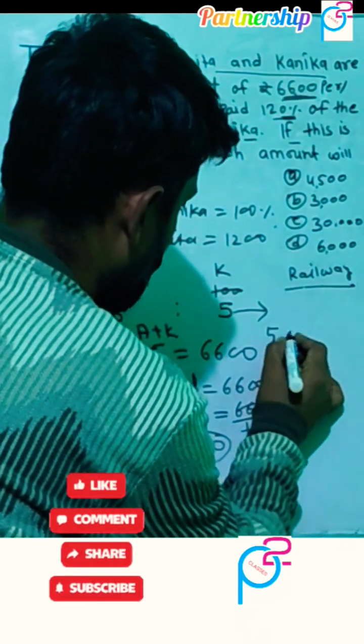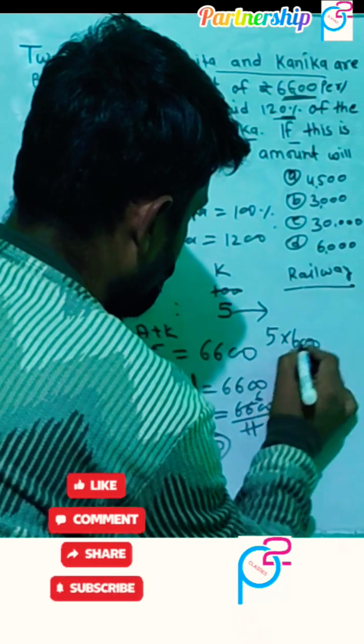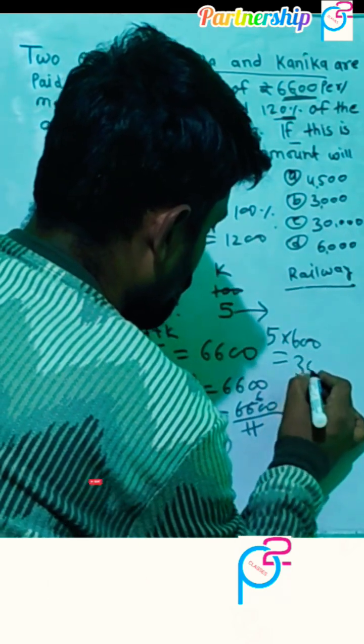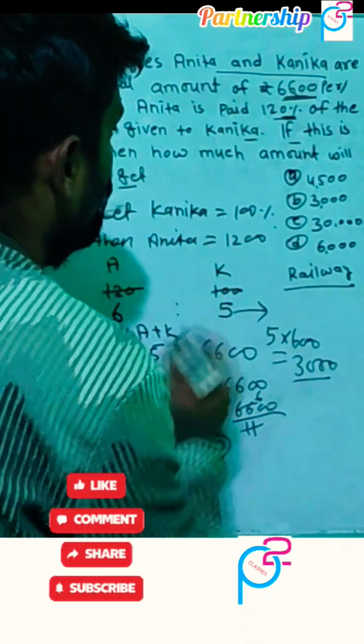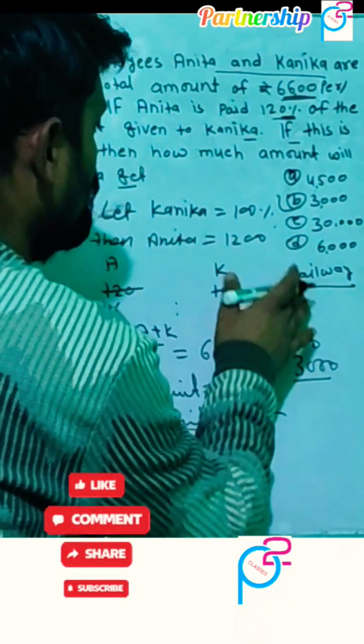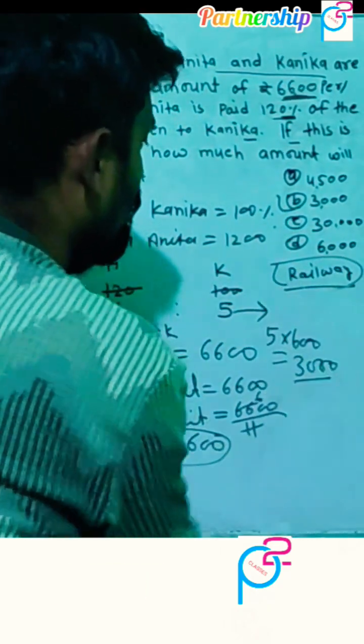then you multiply 5 times 600, then you get the answer: 3000. The answer is given in option B. This is a previous railway question.